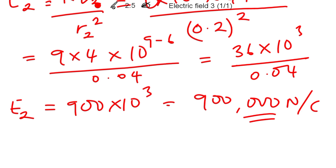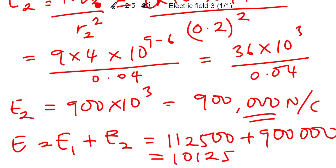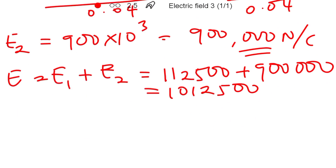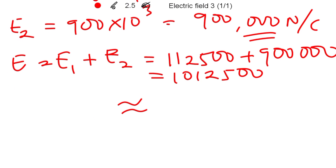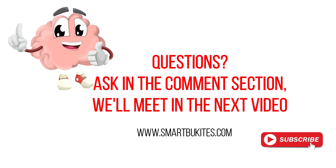We found E1 and E2. To calculate the total electric field E affecting point P, that equals E1 plus E2, which is 112,500 plus 900,000. This equates to 1,012,500. We can approximate this as 1.0 times ten to the power of six newtons per coulomb. So we've calculated the value of E. I hope the concept is clear — if there are any questions, feel free to ask in the comment section. Goodbye.